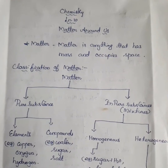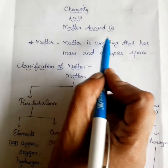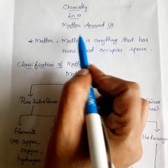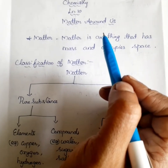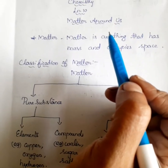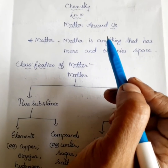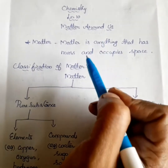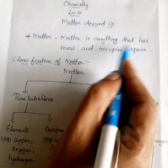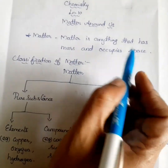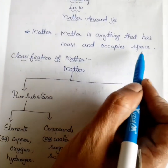Good morning students. Today we are going to learn about the topic: matter around us. What is matter? Everything around us — pen, pencil, plants, animals, stones, food — these are called examples of matter. What is the definition of matter? Matter is anything that has mass and occupies space.